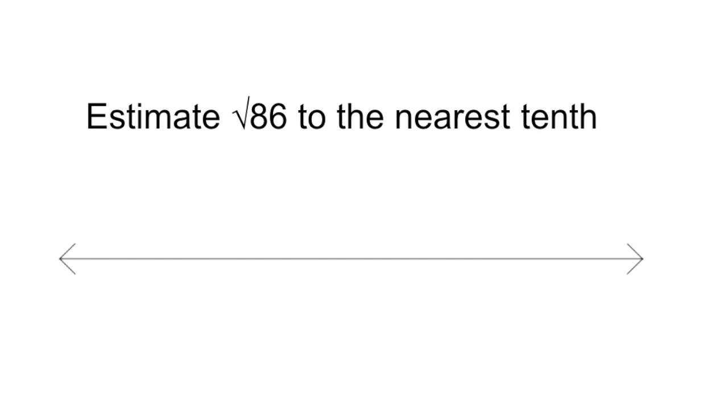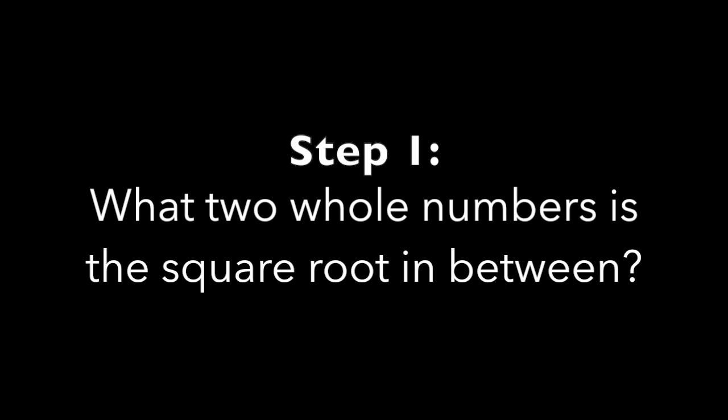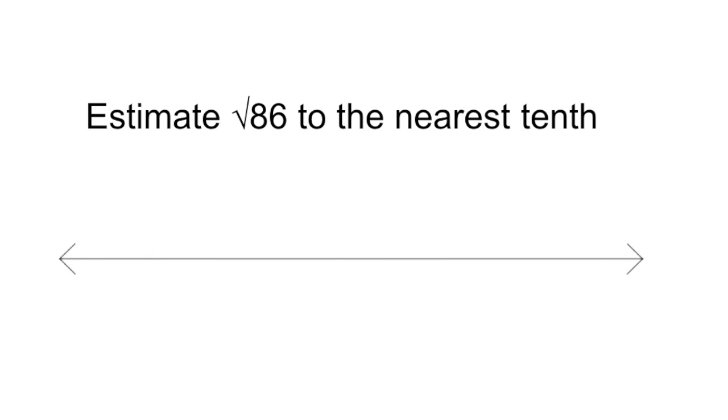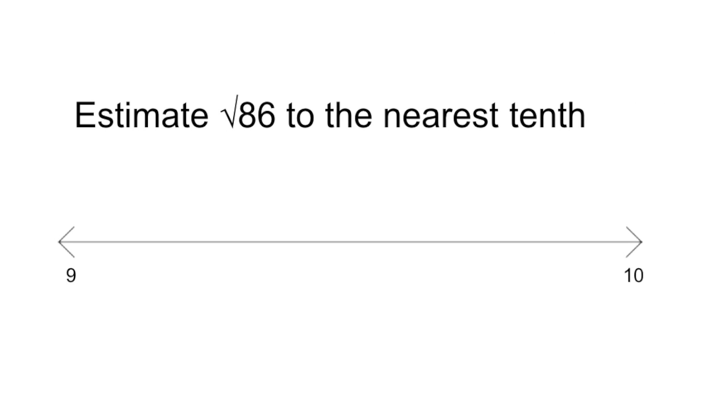So step one, first thing you need to do is find out what two whole numbers your square root is in between. So when I think of square roots, I have the square root of 86. I know that the square root of 9 is 81, and the square root of 10 is 100. So therefore, I know that the square root of 86 would be between 9 and 10. So what I do is I put both 9 and 10 on both sides of my number line.